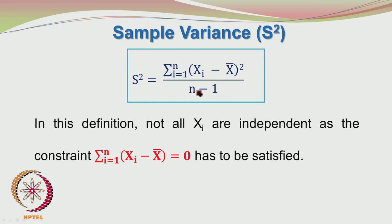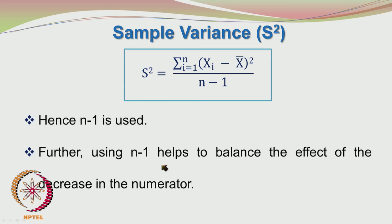There are two reasons for using n − 1. First, Σᵢ₌₁ⁿ (Xᵢ − X̄) = 0, which is a constraint meaning that only n − 1 of the deviations are truly independent. If we know n − 1 of the (Xᵢ − X̄) values, we can find the nth deviation using this constraint — so the nth deviation is not truly independent. Second, using n − 1 helps to balance the effect of the decrease in the numerator, as discussed. The population has parameters μ and σ², and after sampling we get X̄ and S², which we hope are sufficiently representative of μ and σ².